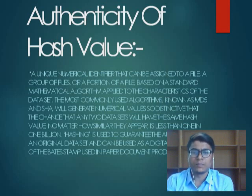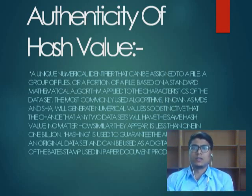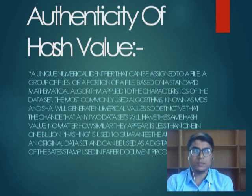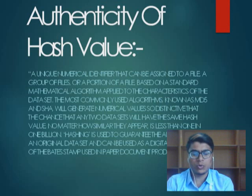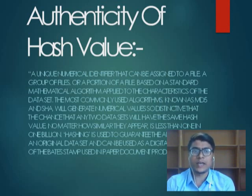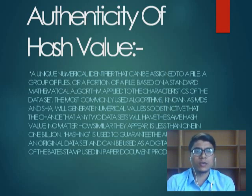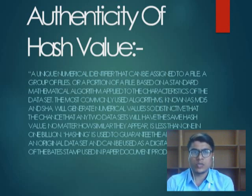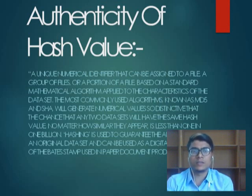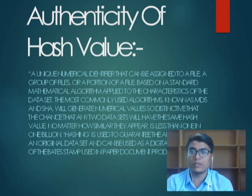Hashing is used to guarantee the authenticity of an original dataset and can be used as a digital equivalent of a paper document. Two similar files, like two images, if tampered, the hash value will change. Even a small dot or single character change will alter the value, proving it is tampered. One in one billion chances are that the hash value is the same yet the file is different — it is very rare, like with fingerprints.